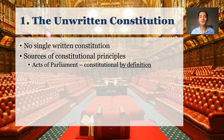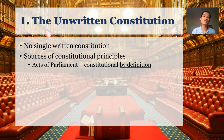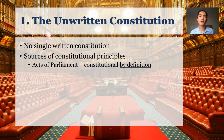There isn't a tradition of judicial review in the United Kingdom where the courts can say parliament may have legislated this, the queen may have granted royal assent to it, but we're going to strike it down because it violates some more fundamental document. Acts of parliament, known as primary legislation, are by definition the most fundamental pieces of British constitutional law. It is really important that you remember that by definition, acts of parliament are constitutional.